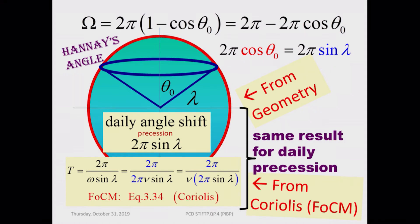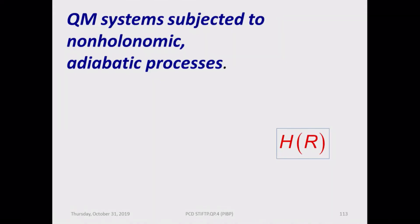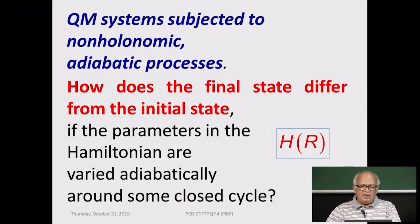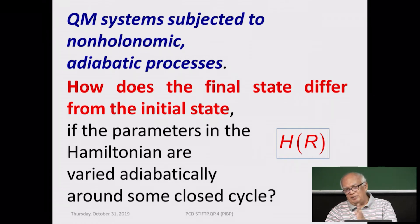I have worked this out in detail in my book Foundations of Classical Mechanics, equation 3.34, where the analysis is done in the rotating frame of reference, carrying out transformations from an inertial frame to a rotating frame to arrive at this result. Here, you get it just from geometry, which is really very nice. We are now going to work with quantum systems subjected to non-holonomic adiabatic processes. The changes are brought about by a Hamiltonian which depends on an external parameter R. The question is: how does the final state differ from the initial state if the parameters in the Hamiltonian are changed adiabatically?